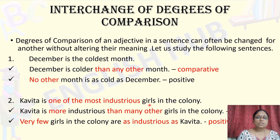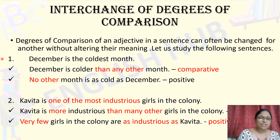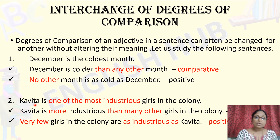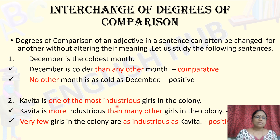That's why here it is 'most industrious': Kavita is one of the most industrious girls in the colony. That means many girls are there — we are talking about one girl among them. The difference from the first example is: 'December is the coldest month' has no other comparison, whereas 'Kavita is one of the most industrious girls' implies many girls and Kavita is among them.